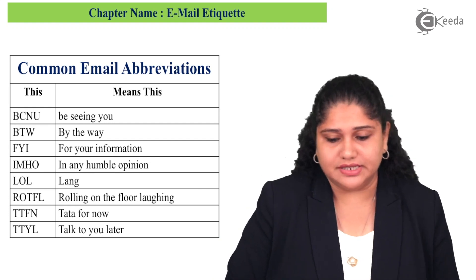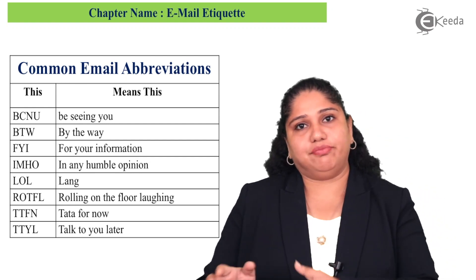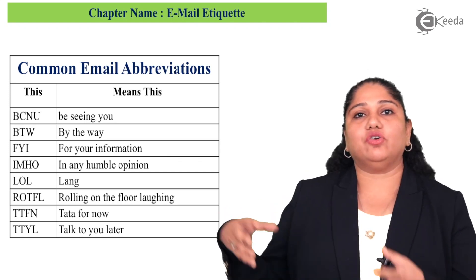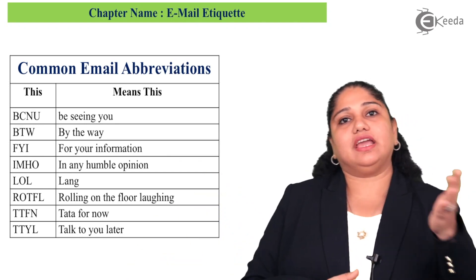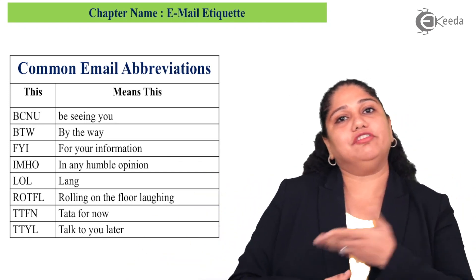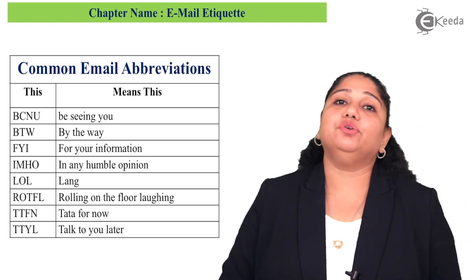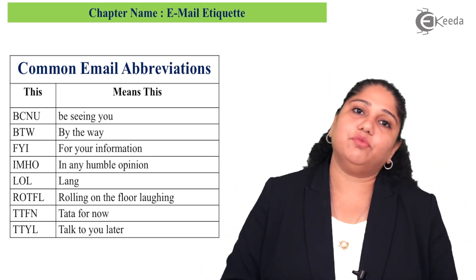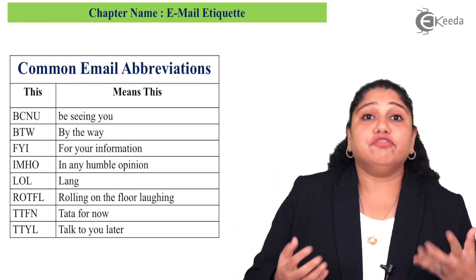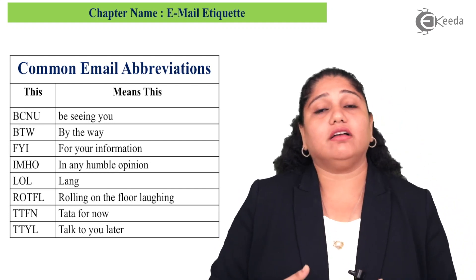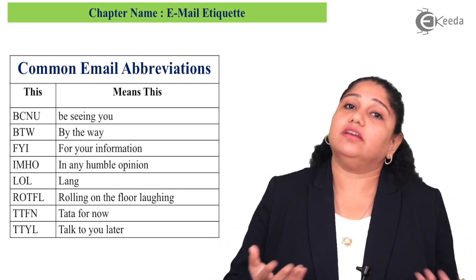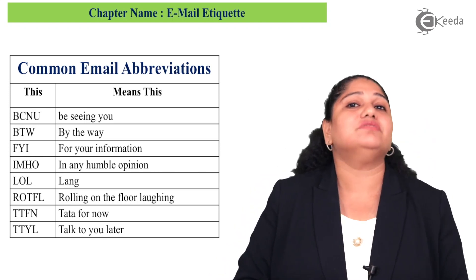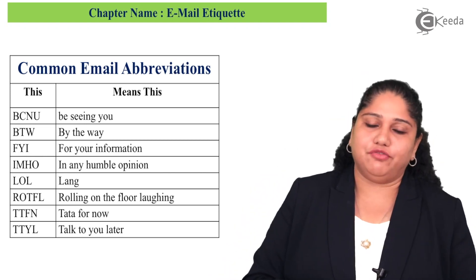COB stands for 'close of business' at 5 p.m. When our office shuts down at 5, we can use the abbreviation COB followed by 5 p.m. People who are into formal email etiquette would understand what we mean. Personally, I think it's important to write the full form, but yes, we can use certain abbreviations — just limit yourself to it.